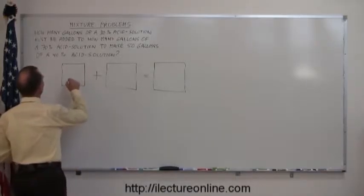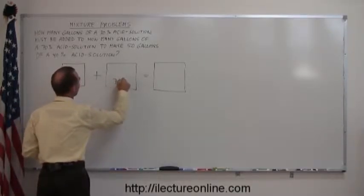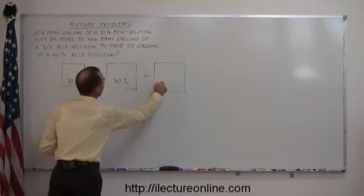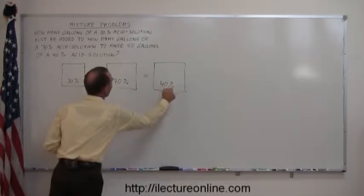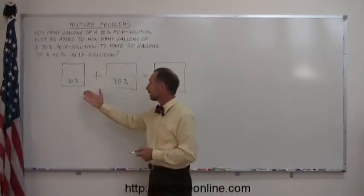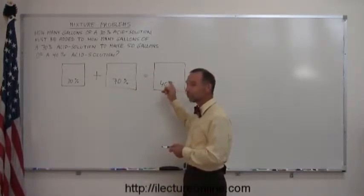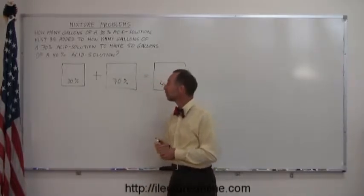So, what I'm going to do then is, I'm going to write that this is a 30% solution, this is a 70% solution and this becomes a 40% solution. All of a sudden, this problem is not so complicated anymore. I can now clearly see that I'm mixing two different kinds of solutions to produce a third solution with a particular concentration of acid.